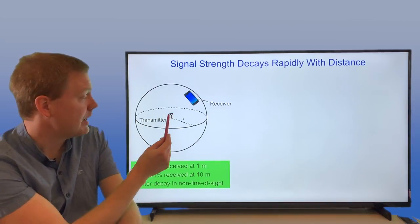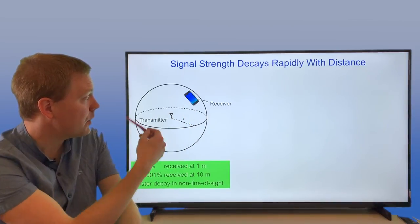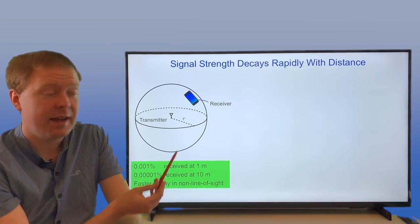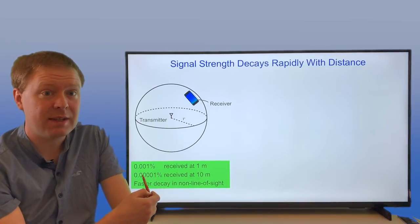We're essentially taking the distance, looking at the size of the receiver, and comparing it with the surface area of a sphere having the same radius. That fraction of the area taken up by the receiver is the fraction of power that is received.